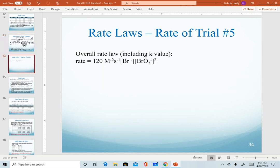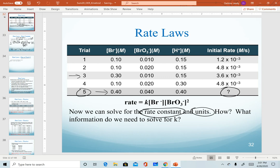And so that brings us to the very last thing that we can calculate here, and that is to find the rate of trial number 5. So here I've rewritten our overall rate law. We go back to our table to look at our values for trial 5. Realize we don't need to include the hydrogen because it's zero order, and so technically I'm just using bromide and bromate concentrations.